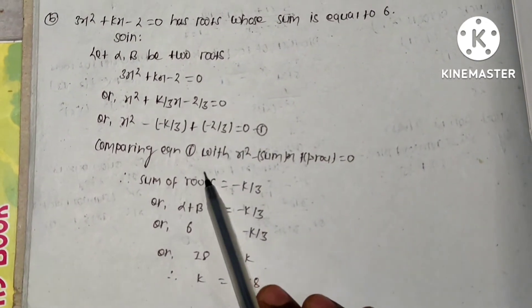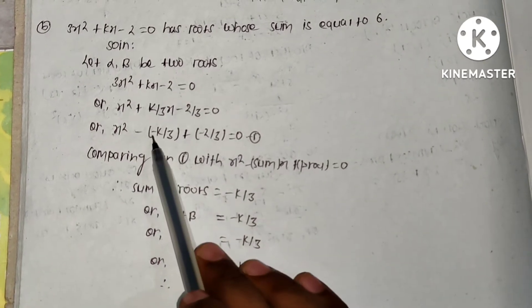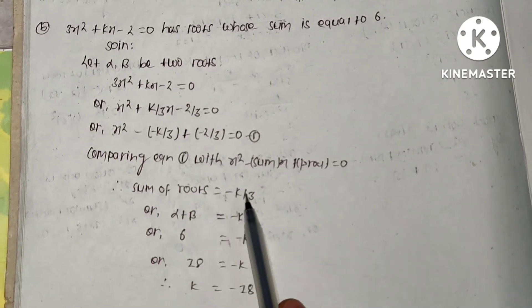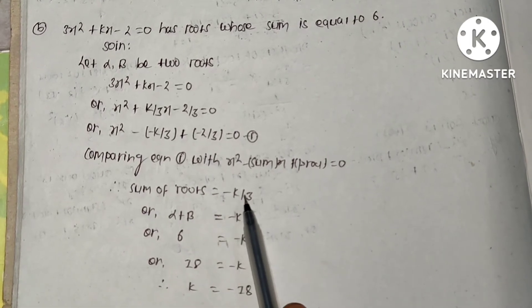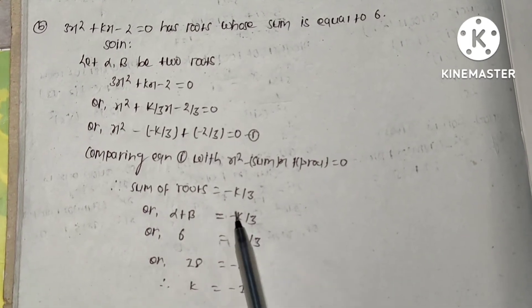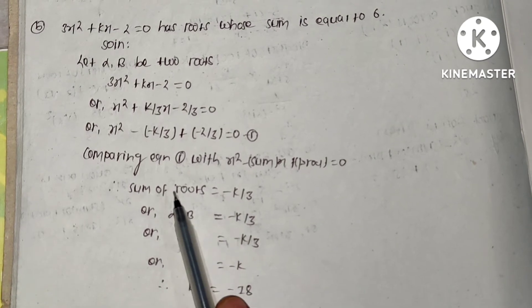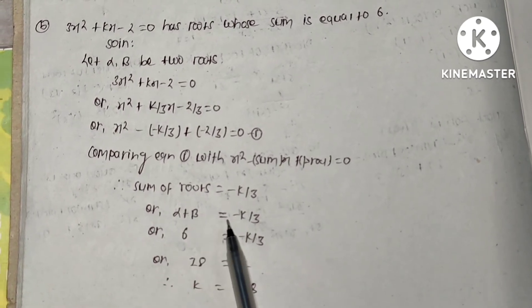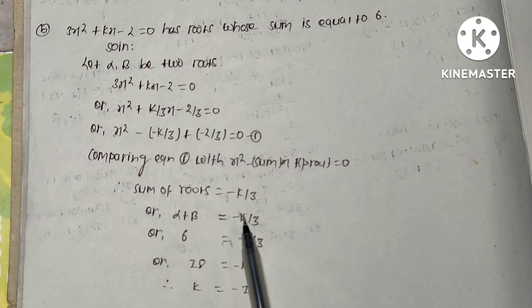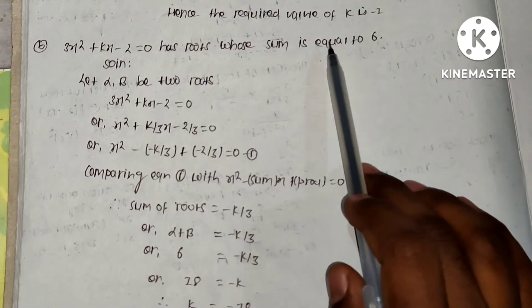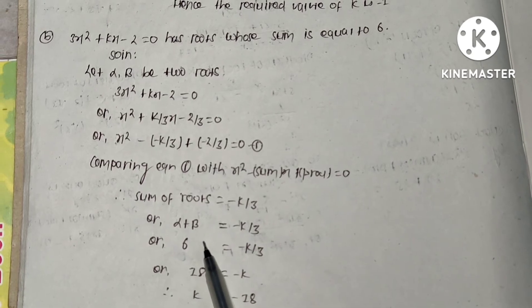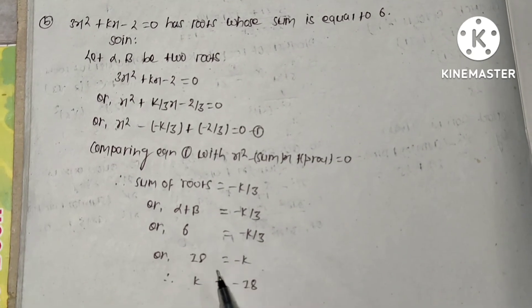Then the sum of the roots becomes -k/3. The sum of the roots is also expressed by alpha + beta, so alpha + beta = -k/3. According to the equation, we have the sum of the roots is equal to 6, so alpha + beta = 6.